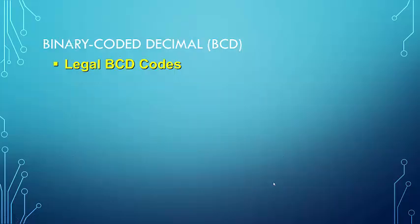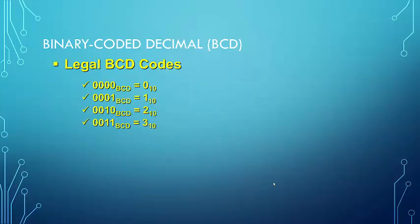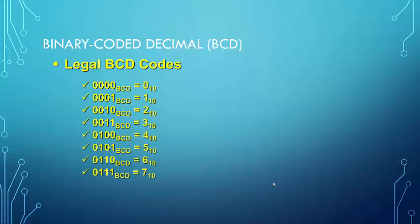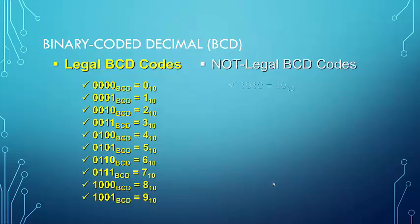Our legal BCD codes are the 4-bit codes for 0, 1, 2, 3, 4, 5, 6, 7, 8, and 9. Our illegal codes are going to be 10, or A in hexadecimal.